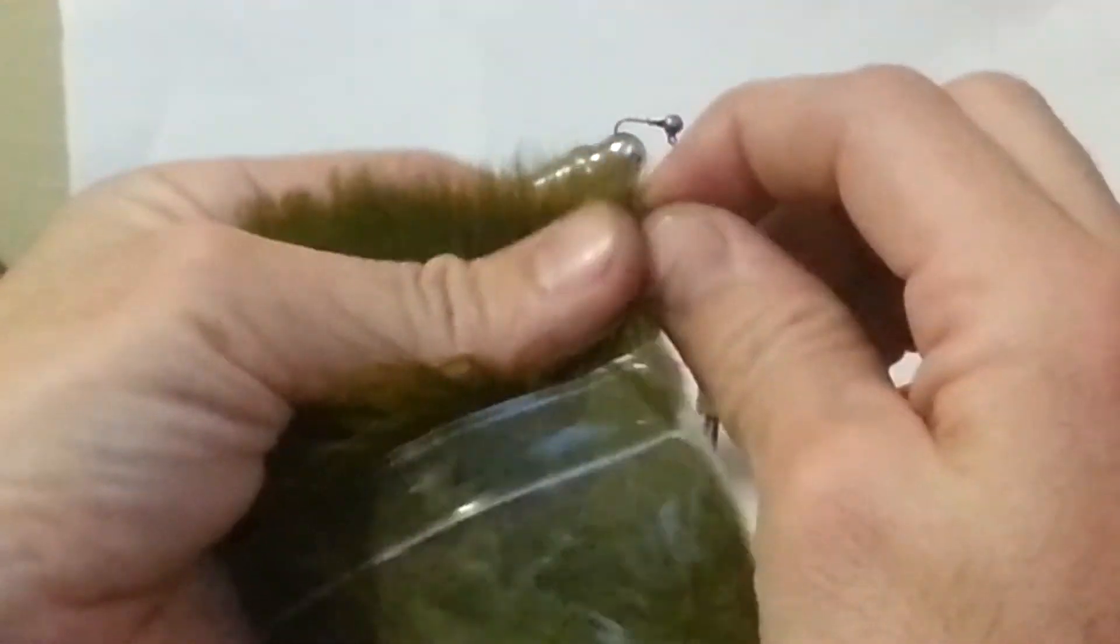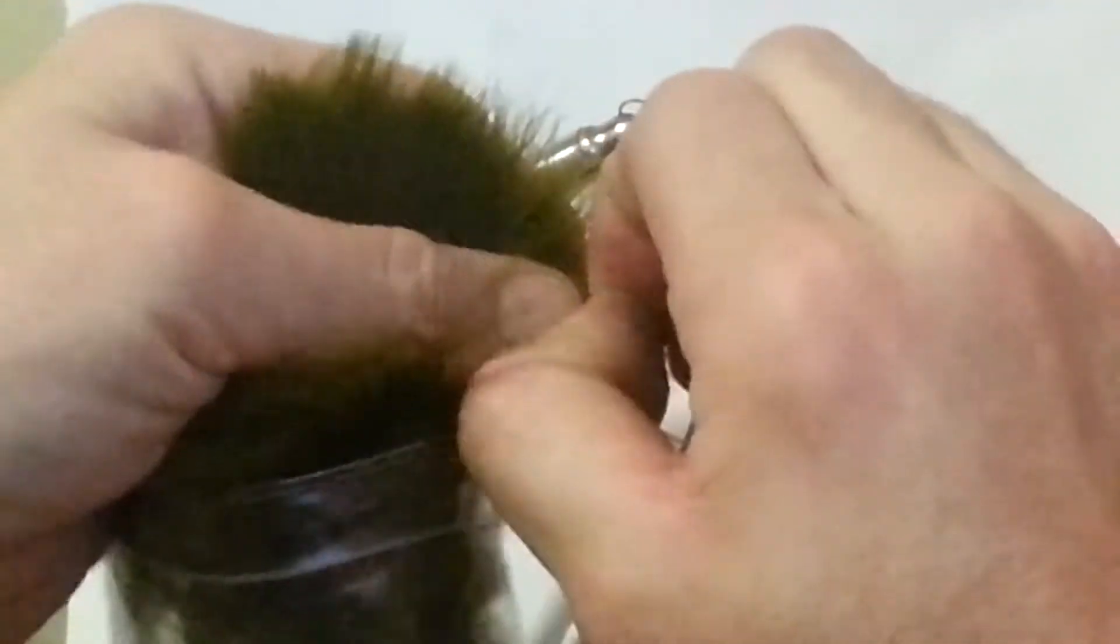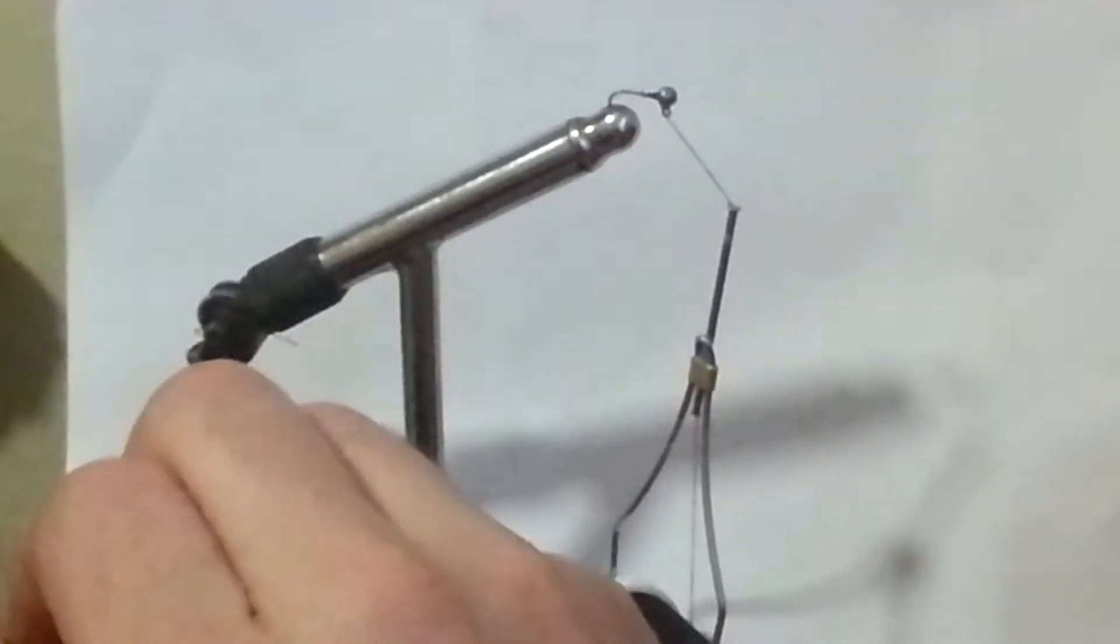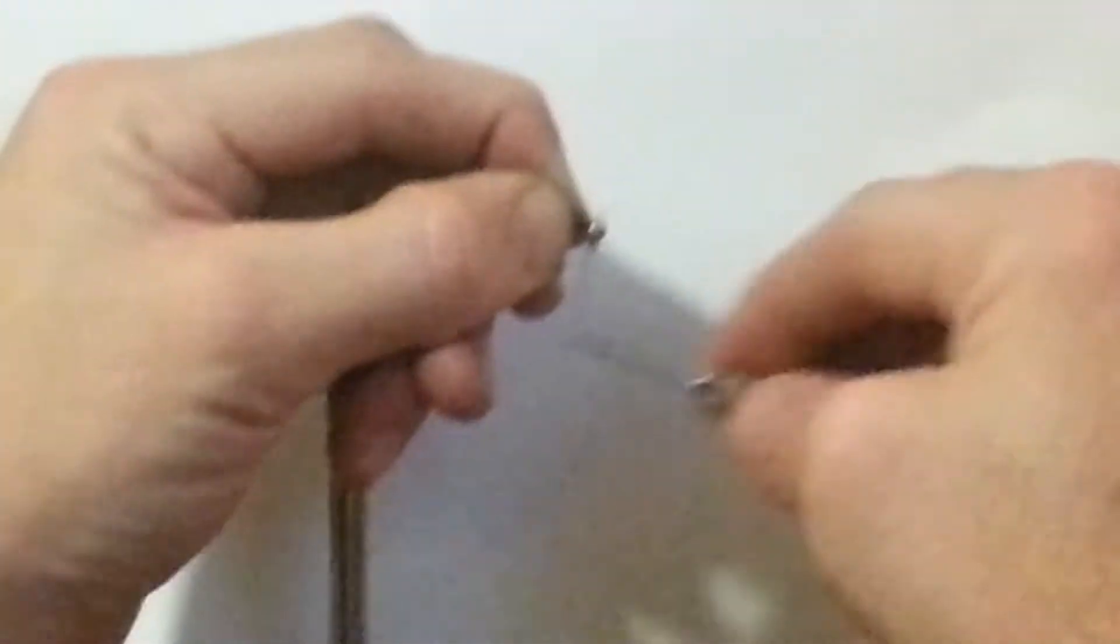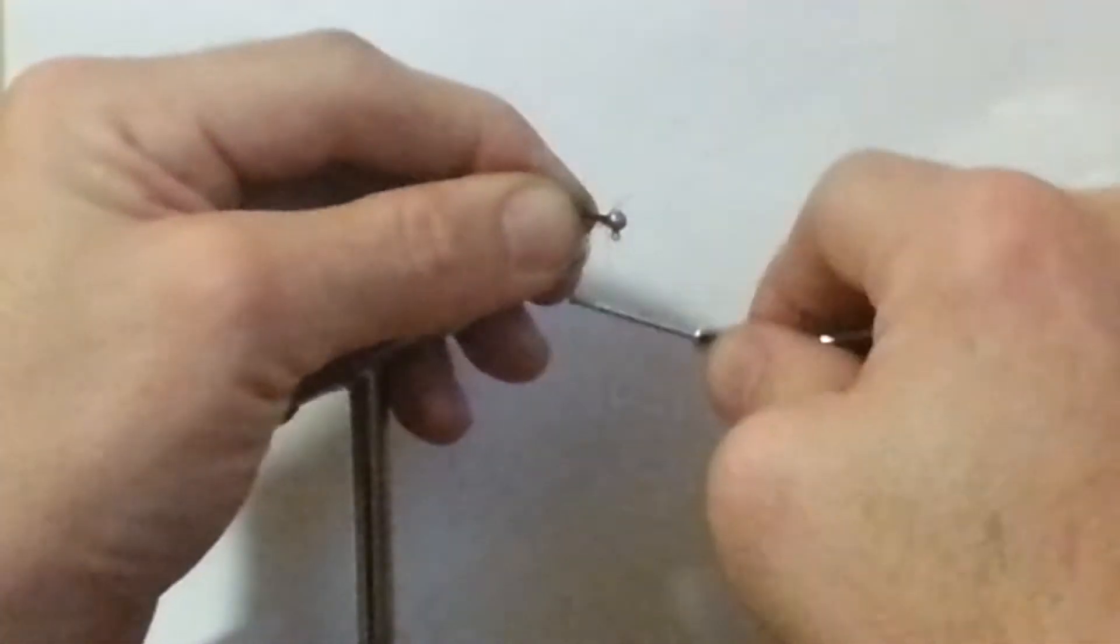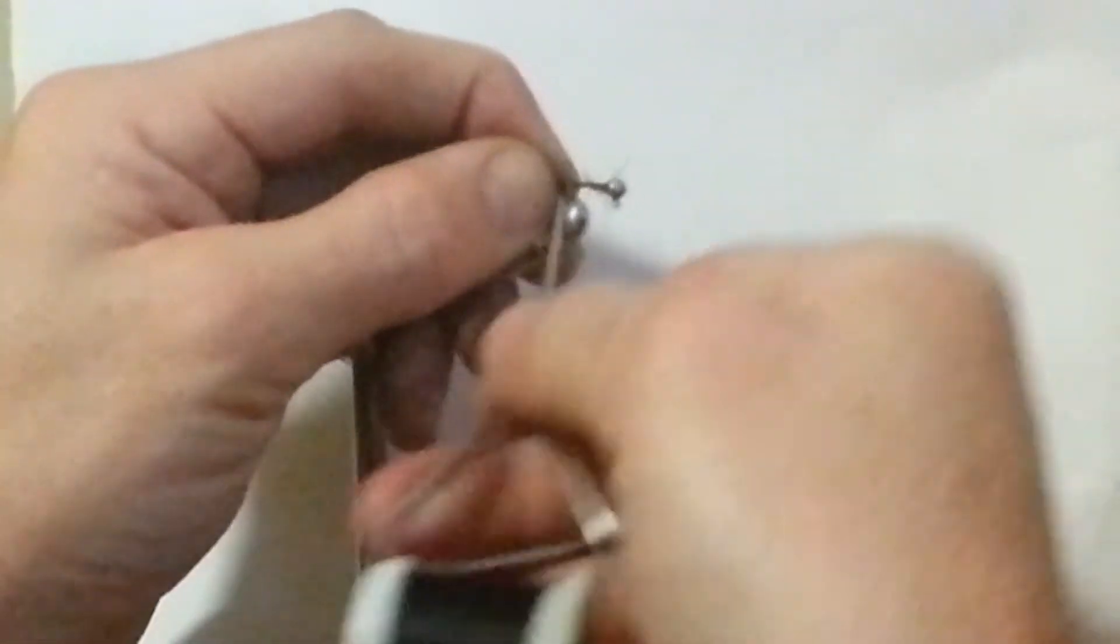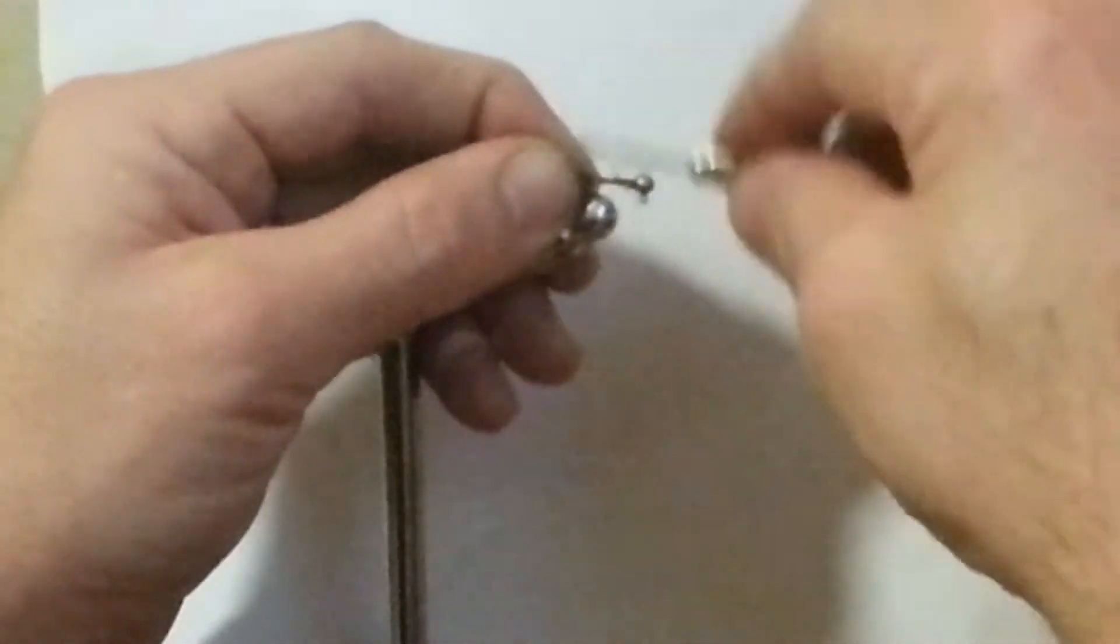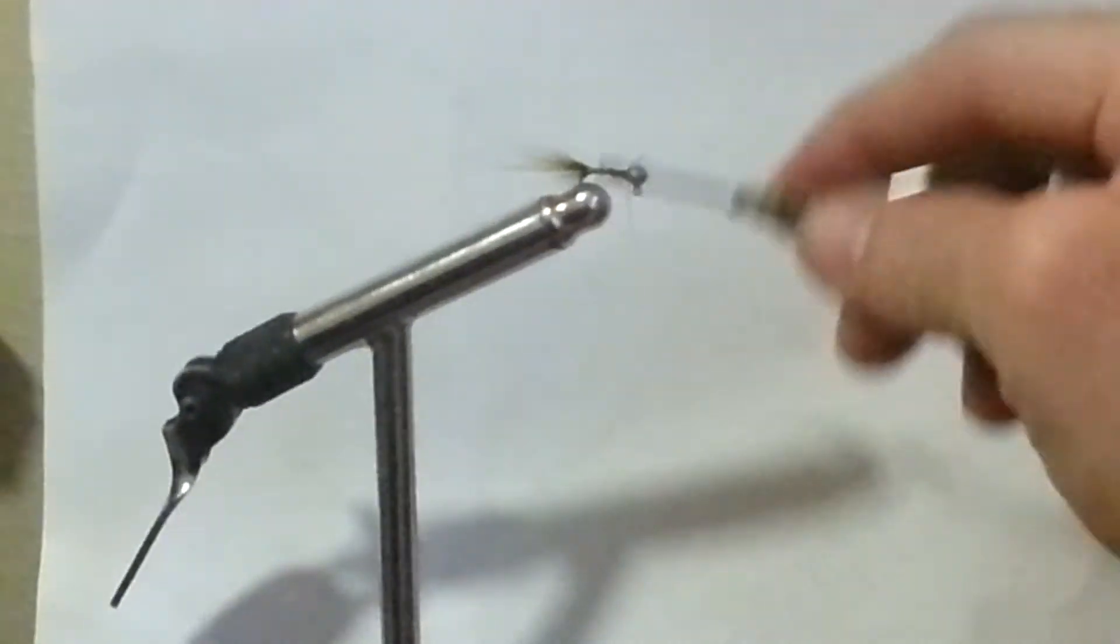Take a little bit of marabou, however much you feel is necessary, and tear that off. Turn it around in the proper direction, lay it on the back of the shank, and then wrap all the way down. I like to keep hold of everything and have the tail pulled down so that everything doesn't bunch up. Get that to the bottom and bring it back to the top.